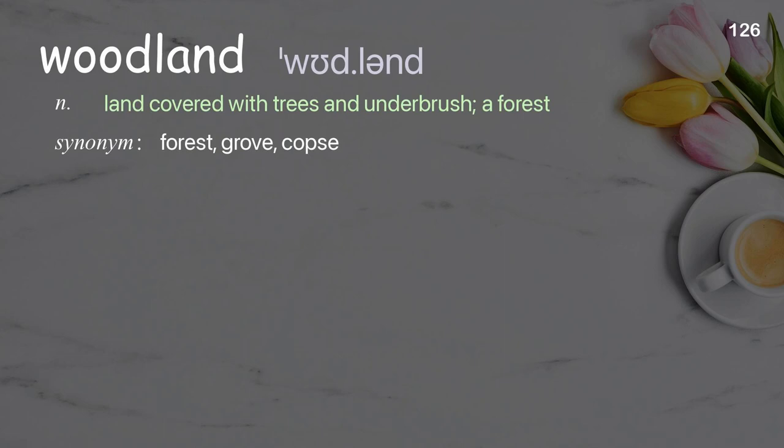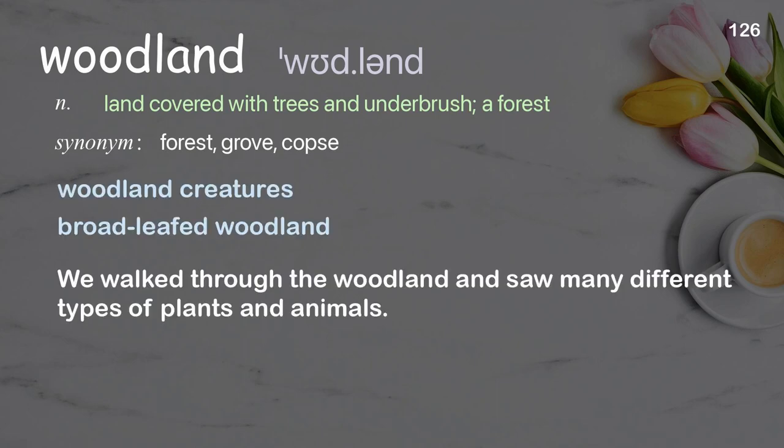Woodland: land covered with trees and underbrush; a forest. Examples: woodland creatures, broadleafed woodland. We walked through the woodland and saw many different types of plants and animals.